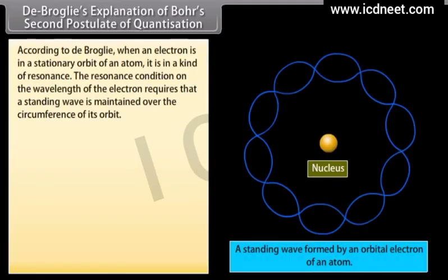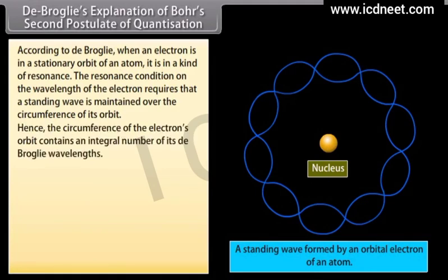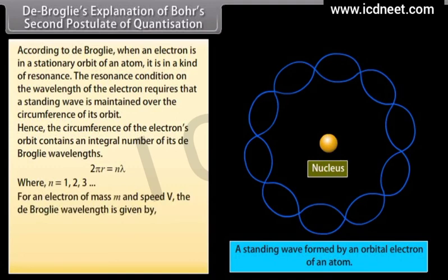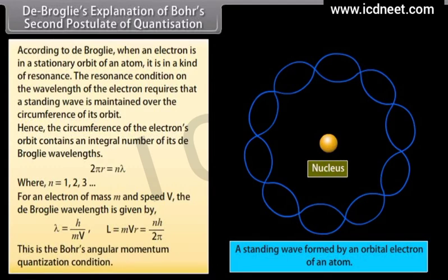De Broglie explained the quantization condition on angular momentum of an orbiting electron. According to De Broglie, when an electron is in a stationary orbit of an atom, it is in a kind of resonance. The resonance condition requires that a standing wave is maintained over the circumference of its orbit. Hence, the circumference of the electron's orbit contains an integral number of its De Broglie wavelengths: 2πr = nλ, where n = 1, 2, 3... For an electron of mass m and speed v, the De Broglie wavelength is h/mv. This gives mvr = nh/2π, which is Bohr's angular momentum quantization condition.